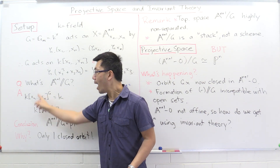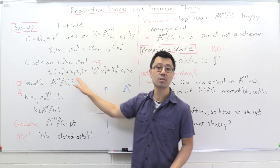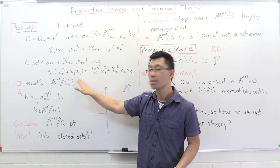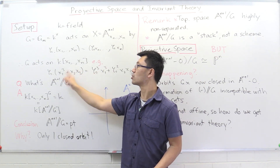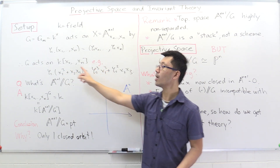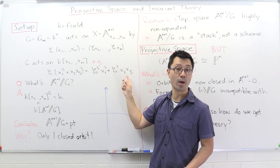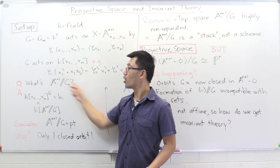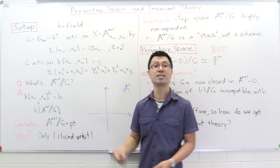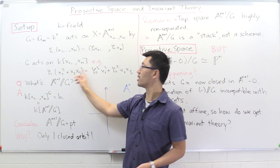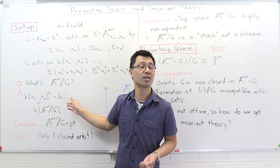Let's look at how the group acts. It scales all monomials by zeta to the power of the degree of that monomial — a cubic term gets scaled by zeta cubed, a degree-two term by zeta squared. So for a polynomial to be invariant, all monomials must have degree zero, meaning they're scaled by zeta to the zero, i.e., they're constants. So the only invariants here are just K.